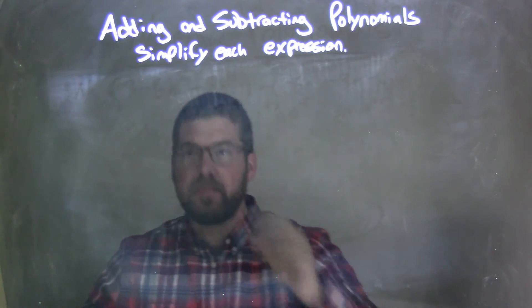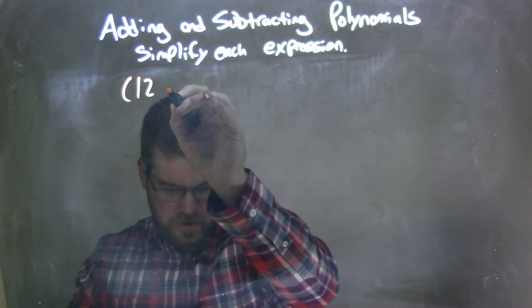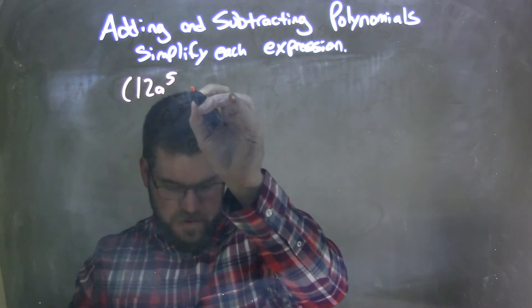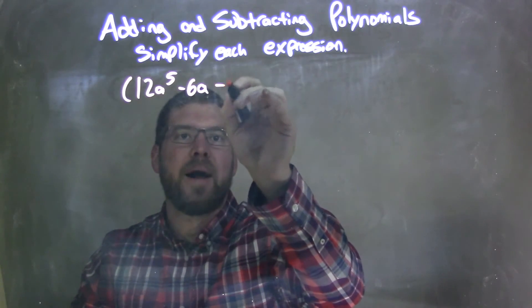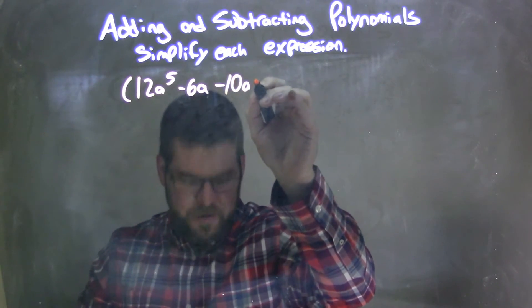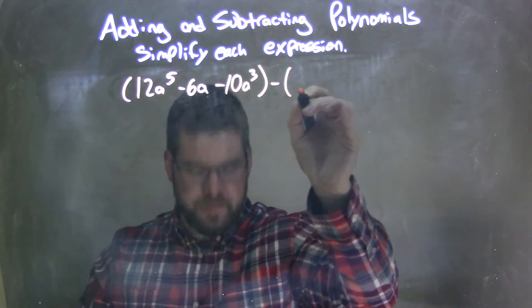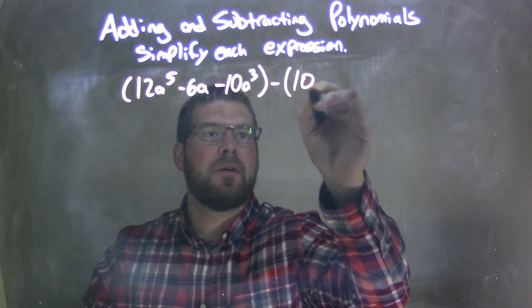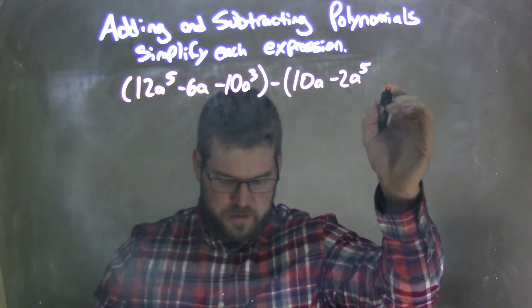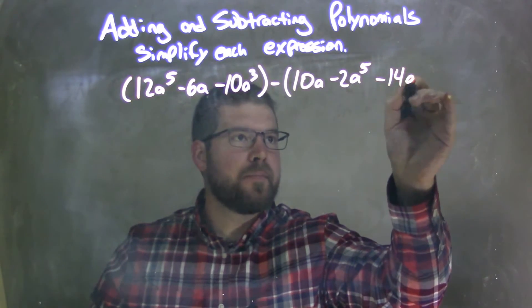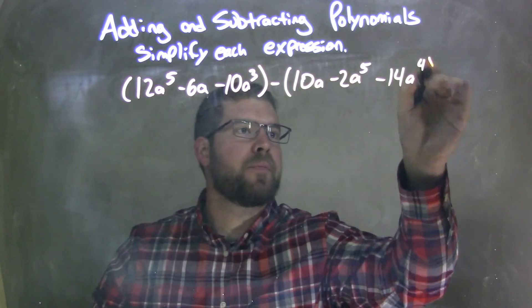So if I was given this expression: parentheses, 12a to the 5th minus 6a minus 10a to the 3rd, parentheses, minus 10a minus 2a to the 5th minus 14a to the 4th.